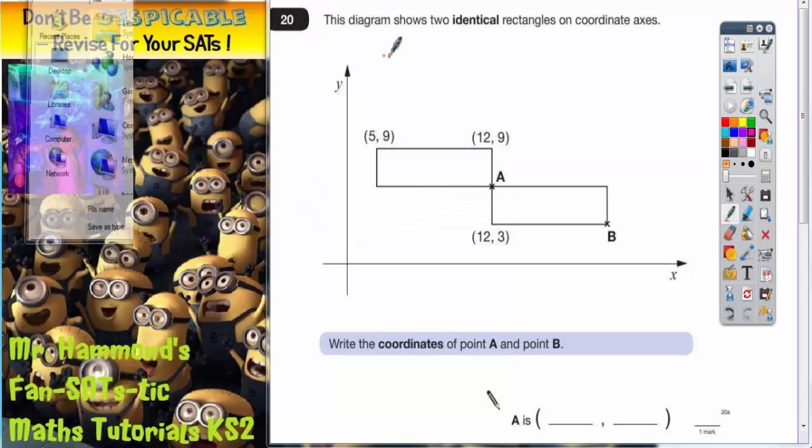Question 20. This diagram shows two identical rectangles on coordinate axes. The rectangles are identical, which will probably come into play later. We've got some coordinates already given to us, and we've got to write the coordinates of point A and point B.